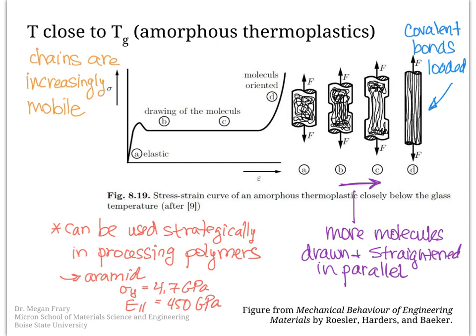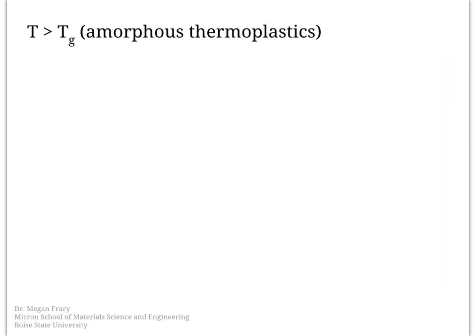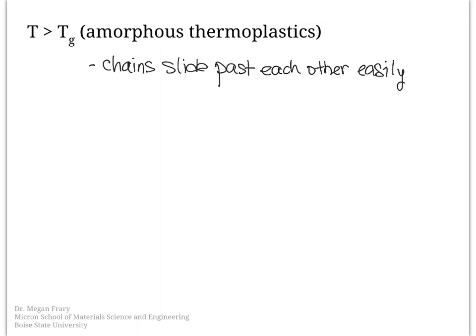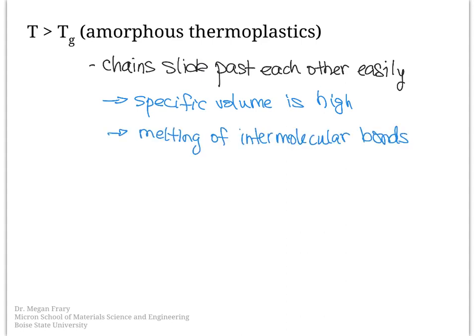The last temperature region to look at is what happens when the glass transition temperature is exceeded. With a load applied above Tg, the mobility is very high and chains will very easily slide past one another. This is due in part to the high specific volume and also to the melting of intermolecular bonds. In this case, amorphous thermoplastics behave similarly to highly viscous liquids and essentially have no strength.